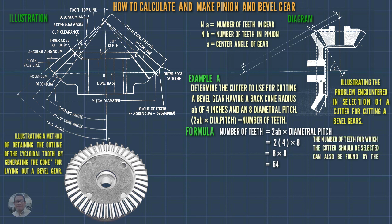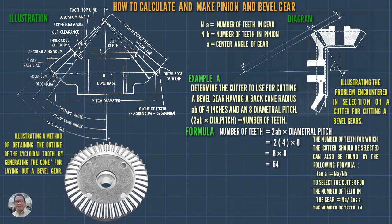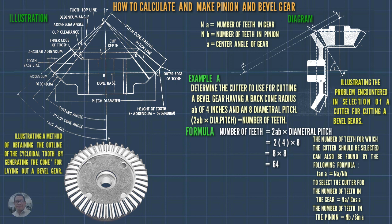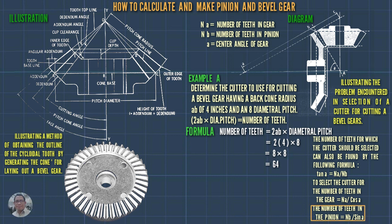The number of teeth for which the cutter should be selected can also be found by the following formula: tangent of the angle equals number of teeth in gear divided by number of teeth in pinion. To select the cutter for the gear: number of teeth equals N_A divided by cosine of the angle. To select the cutter for the pinion: number of teeth equals N_B divided by sine of the angle.